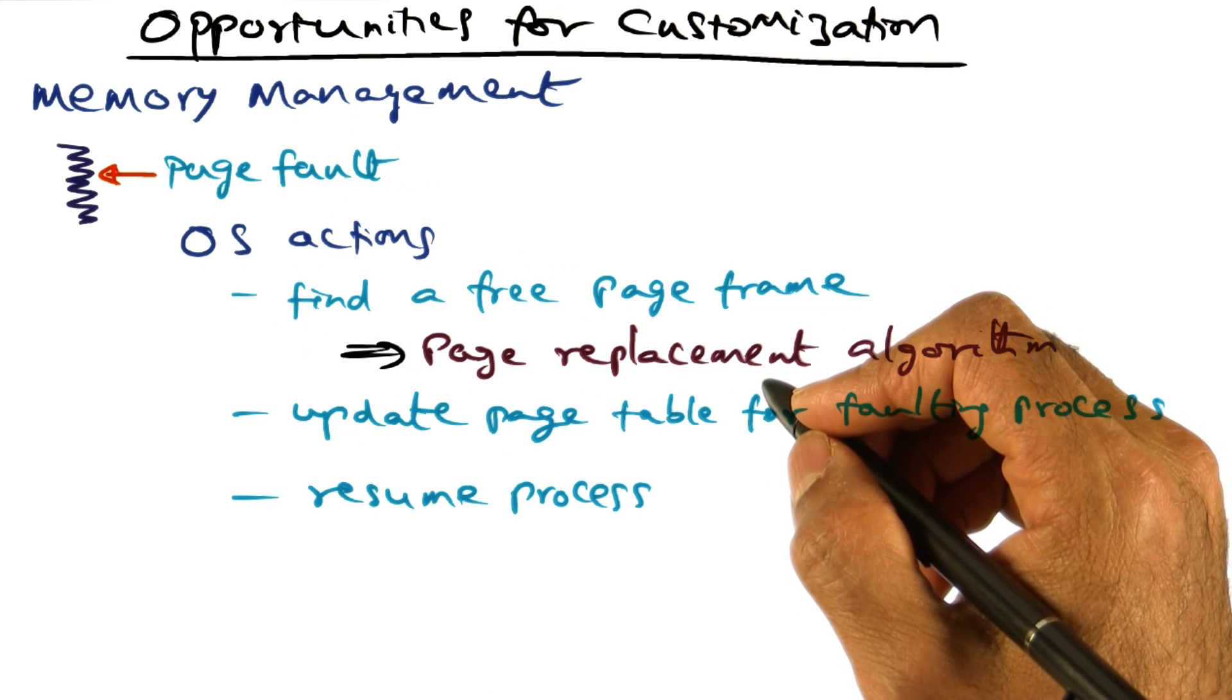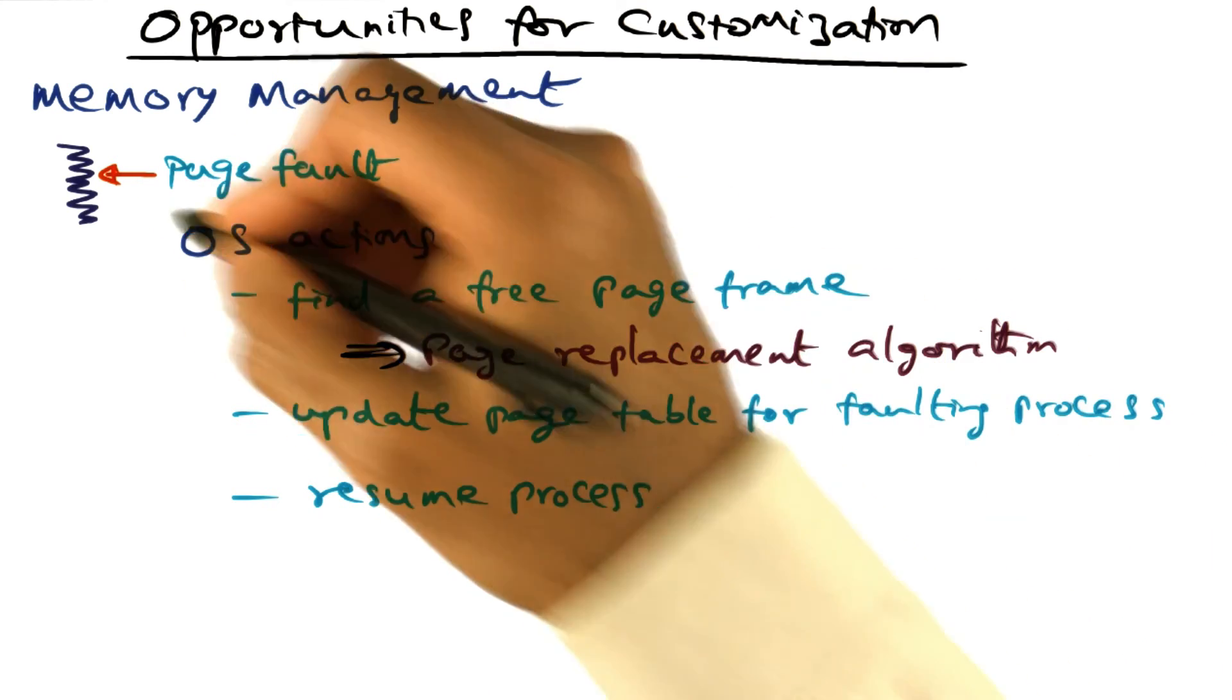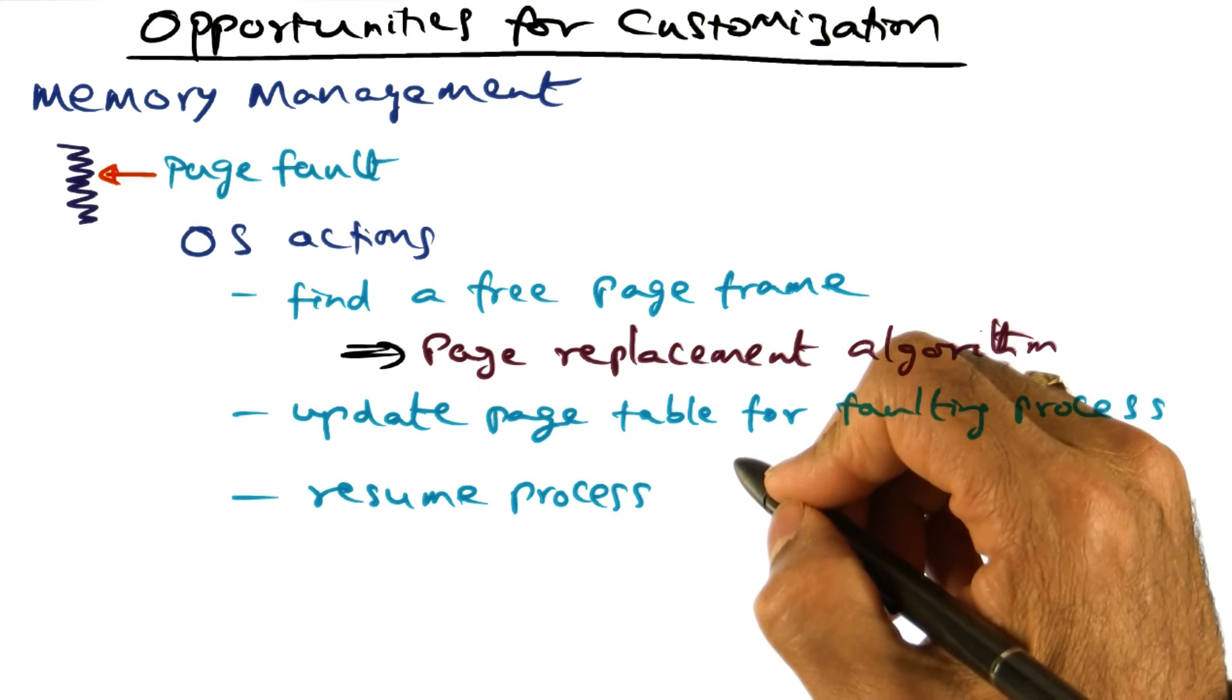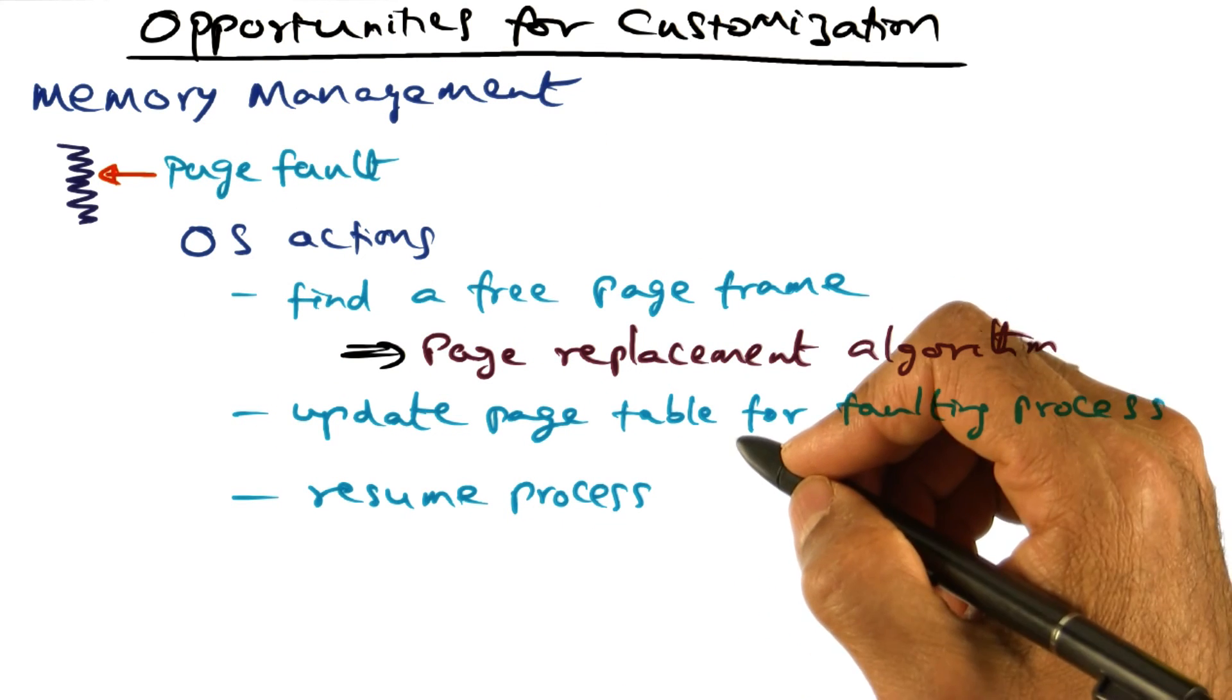But how does the operating system know what the memory access pattern of a particular process is going to be in making this decision? The short answer is it does not.